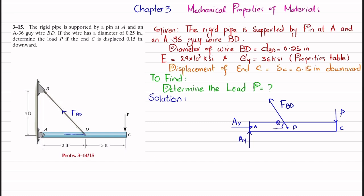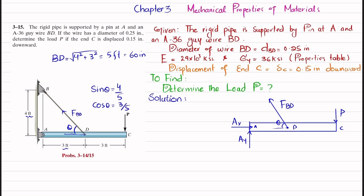Force FBD makes an angle theta with the horizontal. Using the geometry, sin θ = 4/5 because the perpendicular side is 4 and the hypotenuse BD, calculated by the Pythagorean theorem, is 5 feet, which equals 60 inches. Also, cos θ = 3/5.